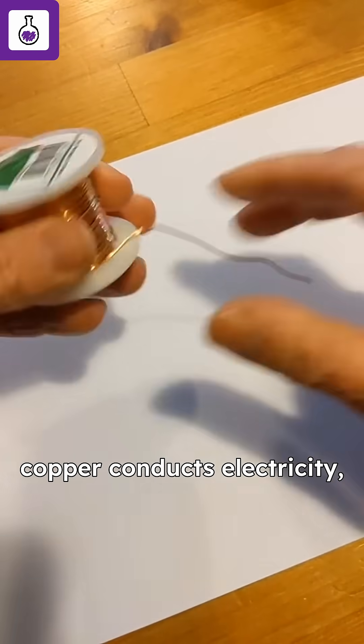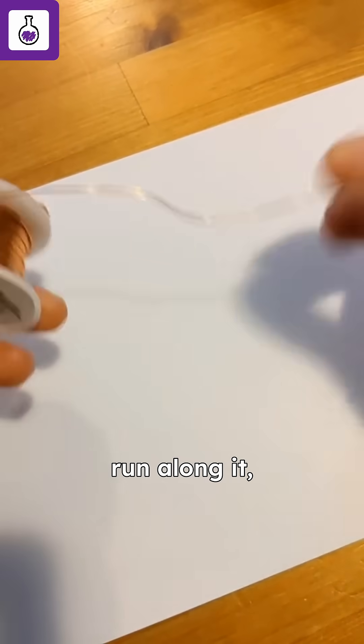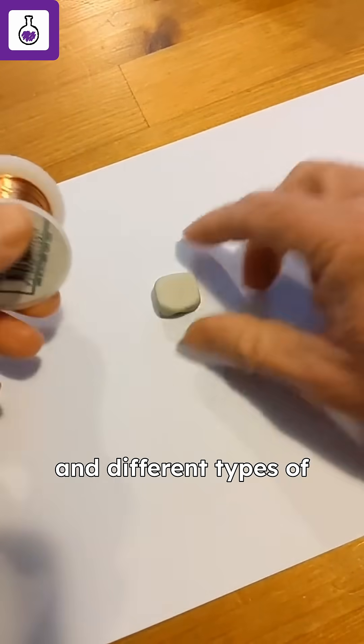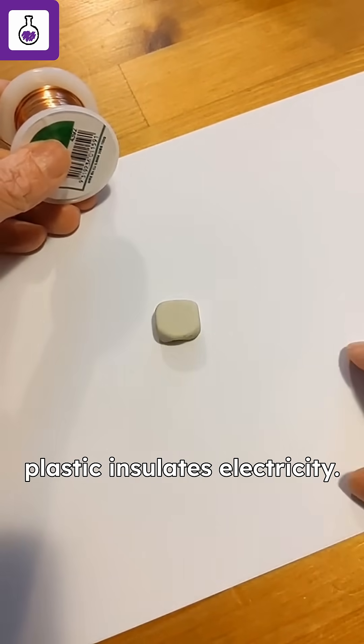Something like copper conducts electricity, allows electricity to run along it, whereas things like rubber and different types of plastic insulates electricity.